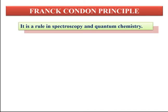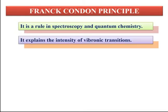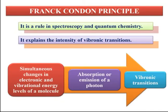The Franck-Condon Principle is a rule used in spectroscopy and quantum chemistry. It explains the intensity of vibronic transitions. Vibrational plus electronic transitions are known as vibronic transitions. That means if vibrational transitions are accompanying electronic transitions, that is called a vibronic transition. Simultaneous changes in electronic and vibrational energy levels of a molecule due to absorption or emission of a photon is known as a vibronic transition.